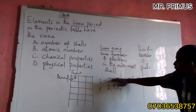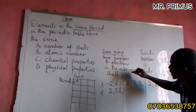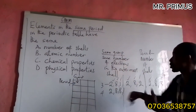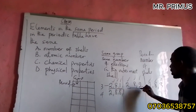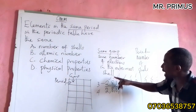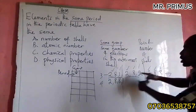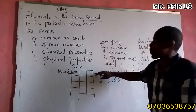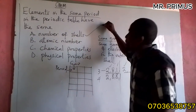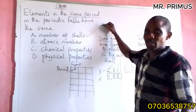Elements in the same period — for example sodium (2,8,1), magnesium (2,8,2), aluminium (2,8,3) — all have the same number of shells: 3. But they do not have the same atomic number, and they do not have the same chemical or physical properties because they go from alkali metals to alkaline earth metals to non-metals. So the answer is: elements in the same period have the same number of shells. God bless you, keep following us.